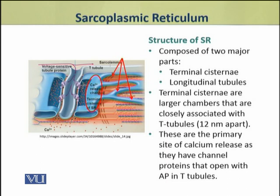Terminal cisternae are larger chambers which are closely associated with the T-tubules. यह दोनों जो हैं, इनकी association इतनी close है कि इनके दर्मियान में जो distance है, that is only about 12 nanometers.